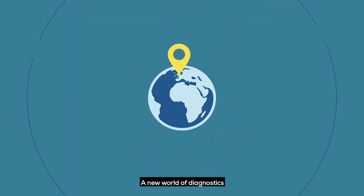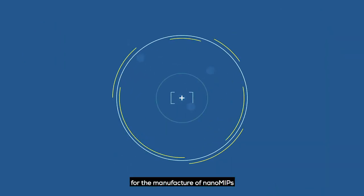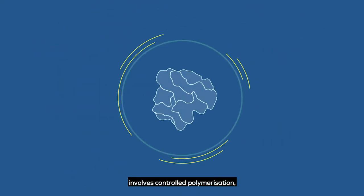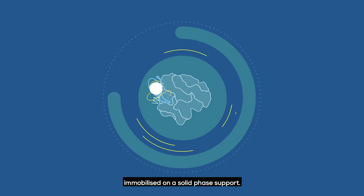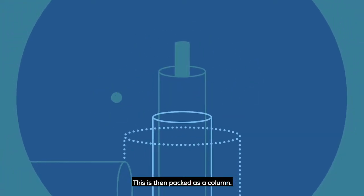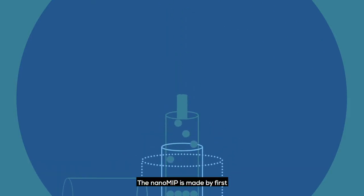A new world of diagnostics. Our simple and elegant process for the manufacture of nano MIPs involves controlled polymerization around a target of choice, immobilized on a solid phase support. This is then packed as a column.